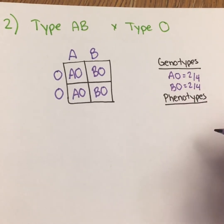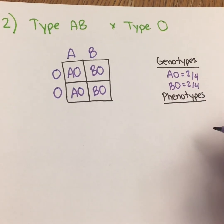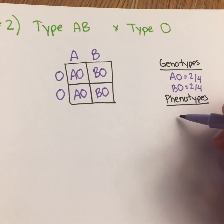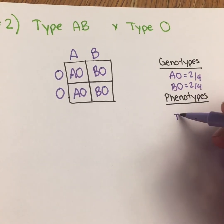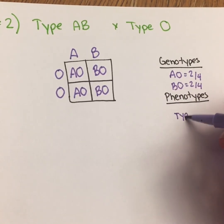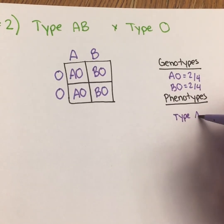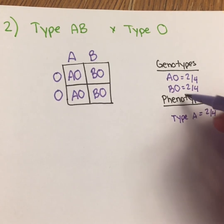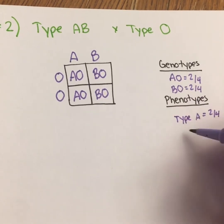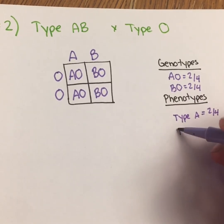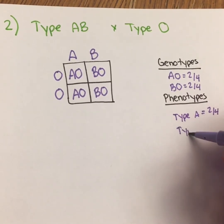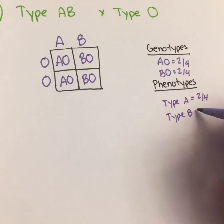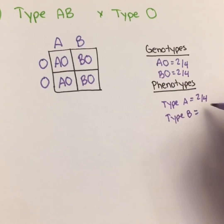For our phenotypes: remember that A is dominant to O, so that person would have type A blood — two out of four. And the BO person would have type B blood, also two out of four.